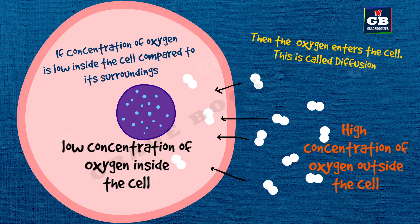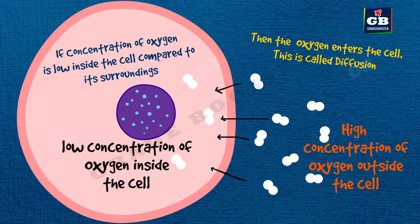The concentration of oxygen outside the cell is high compared to its concentration inside the cell, so oxygen molecules enter the cell through the plasma membrane. This process is called diffusion.